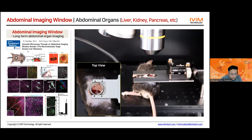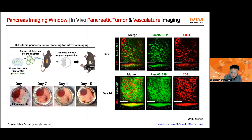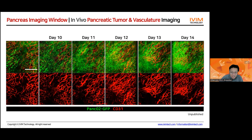This is the abdominal imaging window — a ring-shaped window — which allows imaging of the liver, pancreas, spleen, and kidney. In one particular application, we implant it on the side of the mouse, place the pancreas in the middle, and inject mouse pancreatic cancer cells (PANC02-GFP) there. We can image the same mouse repeatedly — this is exactly the same location from day 9 to day 14. We can see how the PANC02-GFP cancer cells proliferate and how tumor vessel density increases. We can track everyday changes of the pancreatic tumor cell and the vessel from day 9 to day 14.